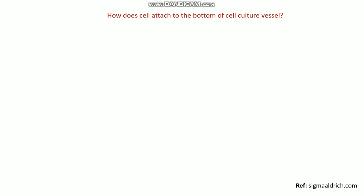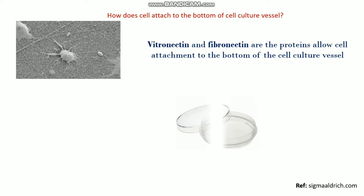First we need to know how cells attach to the bottom of the cell culture vessel. Basically there are two different kinds of proteins — vitronectin and fibronectin — and these two proteins allow cell attachment to the bottom of the cell culture vessel. These two proteins are secreted by the cells and they allow cell attachment.